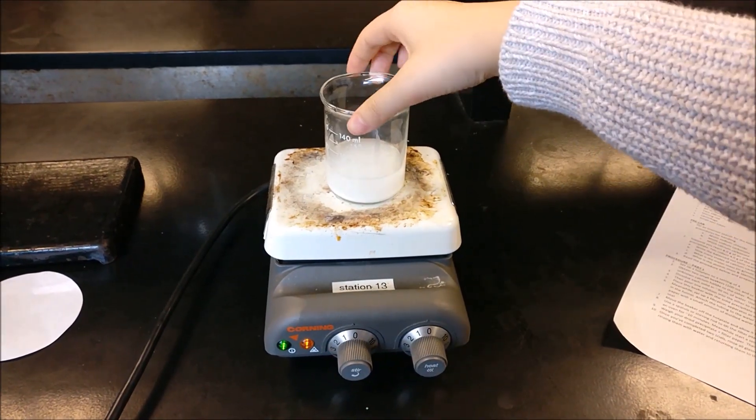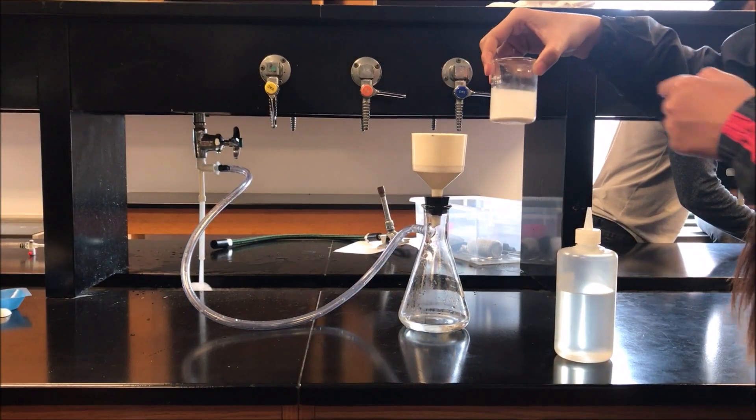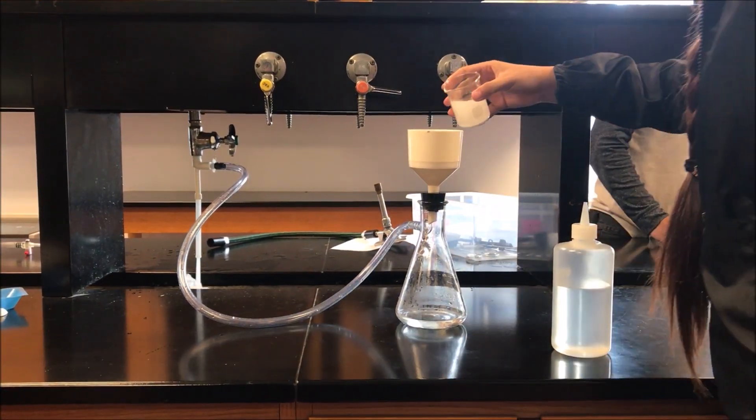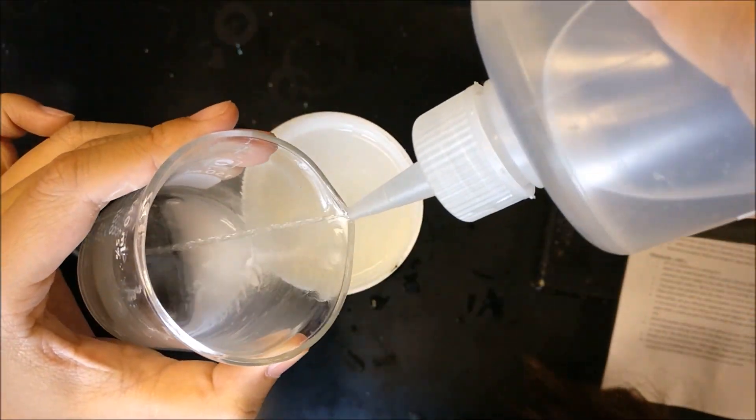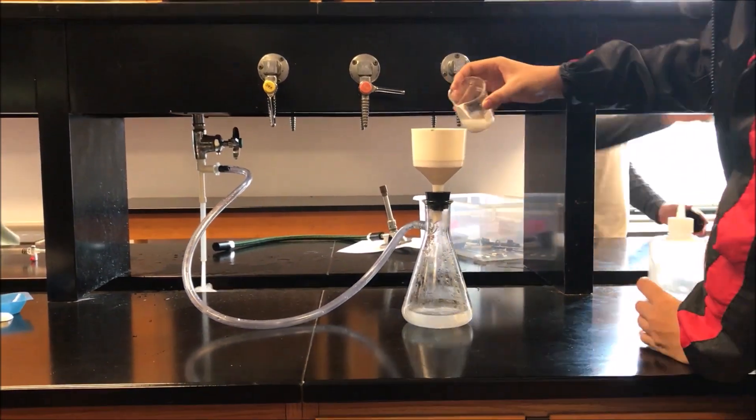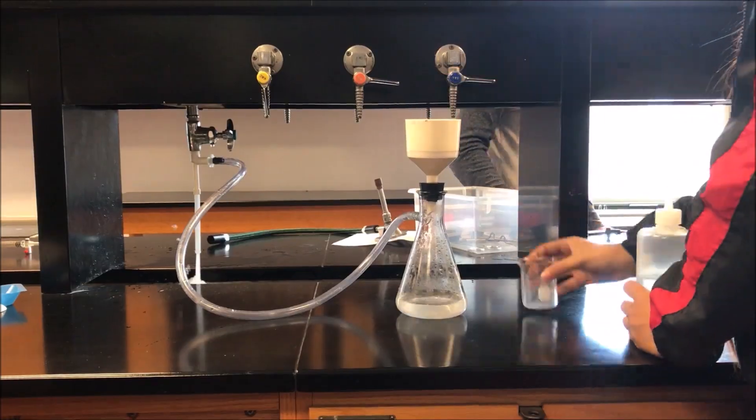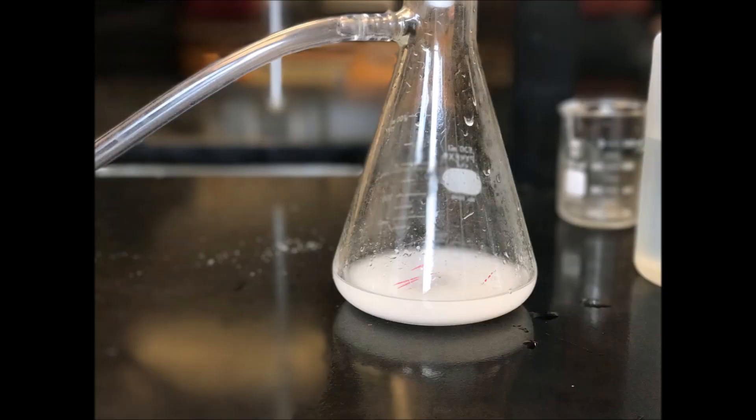Take the beaker off the hot plate and let it cool. Filter the precipitate using the filtration apparatus. If you have some precipitate stuck to your beaker, rinse it with water and pour it into the apparatus. Your beaker should not look like this. It should be clear inside.